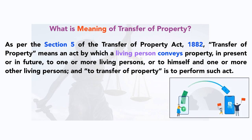Associations, corporations, companies, firms, and trusts are all considered legal persons under the law. So all such entities can sell property in their own name and can buy property in their own name. In present or in future — 'conveys' means transfer, basically giving, selling, exchanging, or whatever — we will discuss those later.